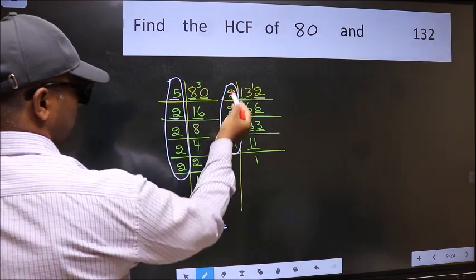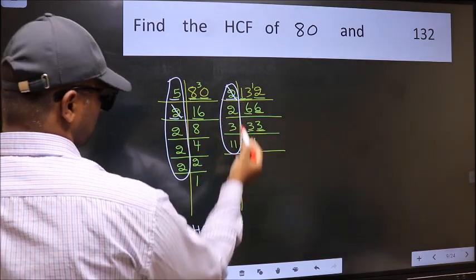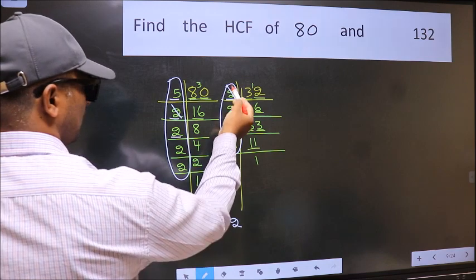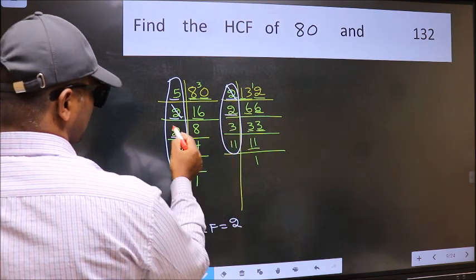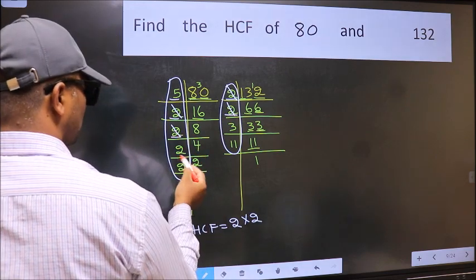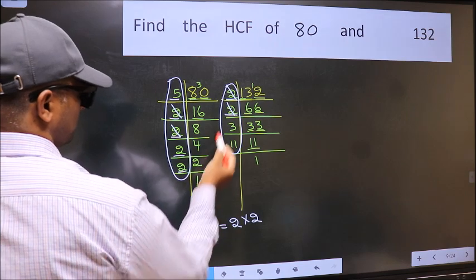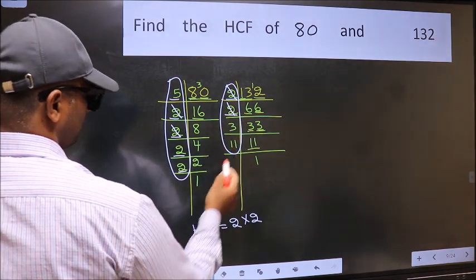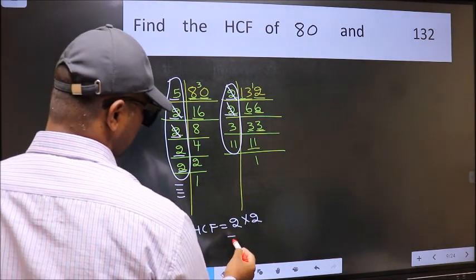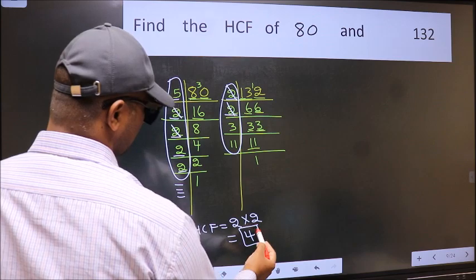Next number 2. Do we have 2 here? Yes. So cut 2 right here. Next number 2. Do we have 2 here? No. Next number 2. Do we have 2 here? No. No more numbers are left out. So our HCF is 2 into 2. 4 is our HCF.